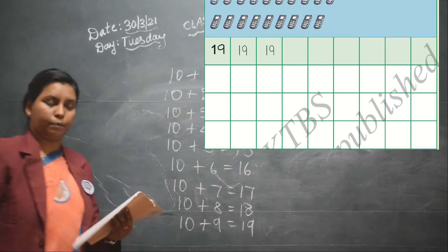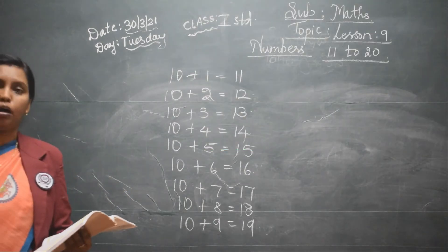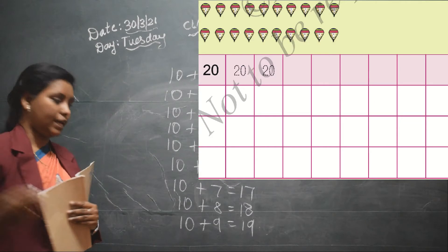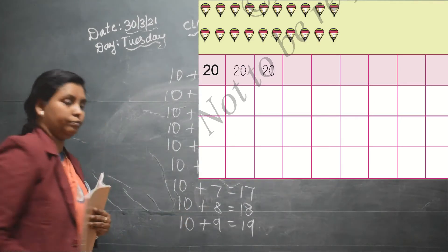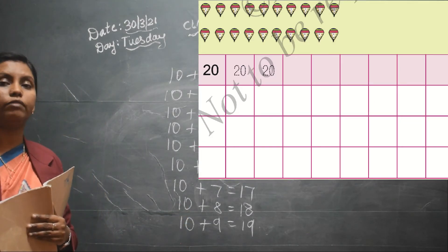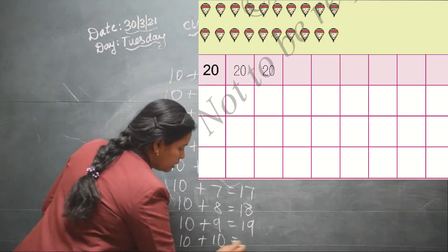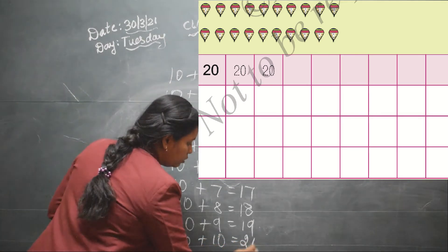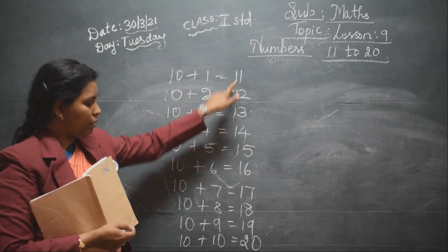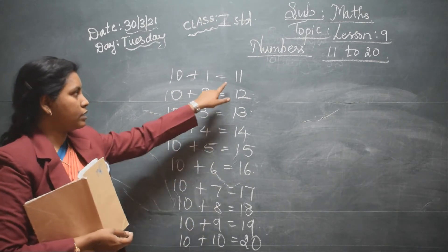Lastly they have given you the picture of tops. The top row is 10 and the row below is also consisting of 10 tops, so that is 10 plus 10 is equal to 20. So these are the numbers from 11 to 20.